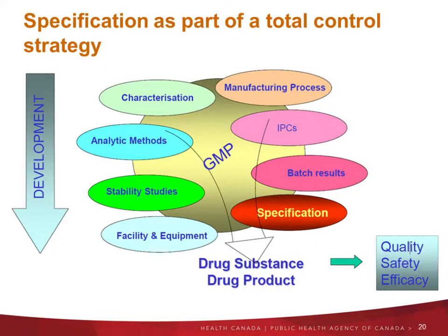This next slide illustrates the spec as part of the overall control strategy. The specs are linked to the manufacturing process, to preclinical data and clinical studies, and to the analytical methods. They also have to account for the stability studies — the stability data of the drug substance and drug product — to ensure they will have the quality required to support the safety and efficacy shown in the clinical studies.